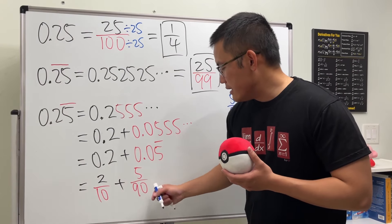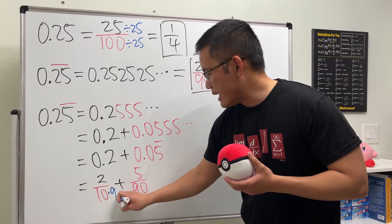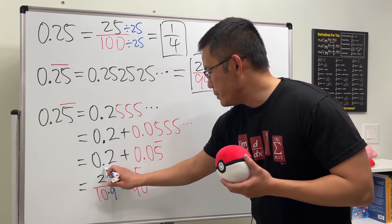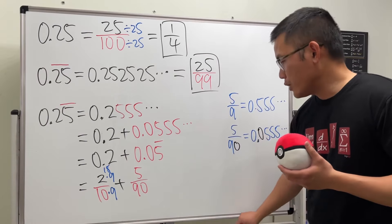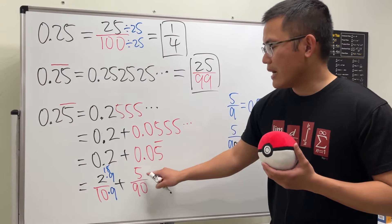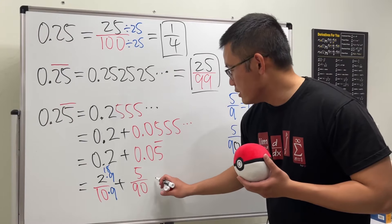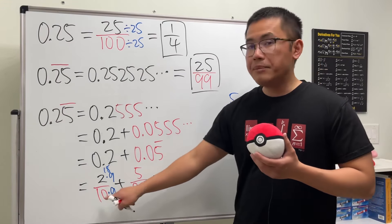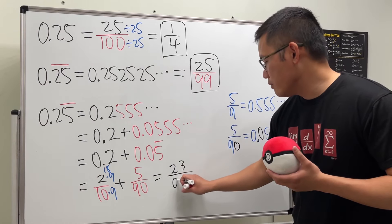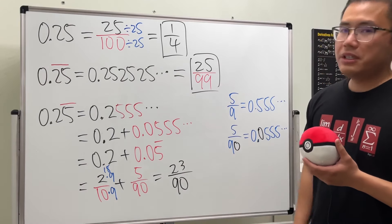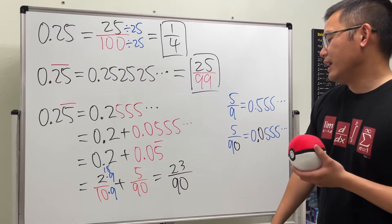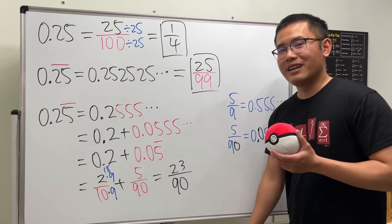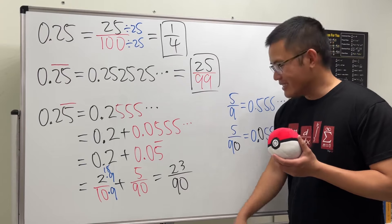Now we add the fractions: 2 over 10 plus 5 over 90. We need a common denominator, so multiply the first fraction by 9 over 9. The top becomes 18, and 18 plus 5 is 23, giving us 23 over 90. We cannot reduce this, so 23 over 90 is the final answer. Go ahead and check on your calculator!